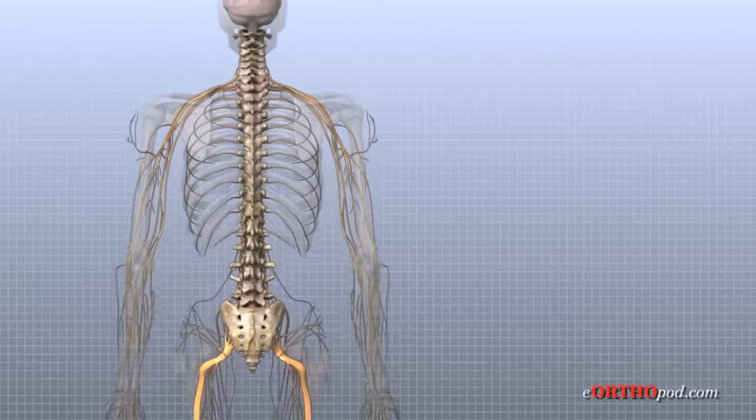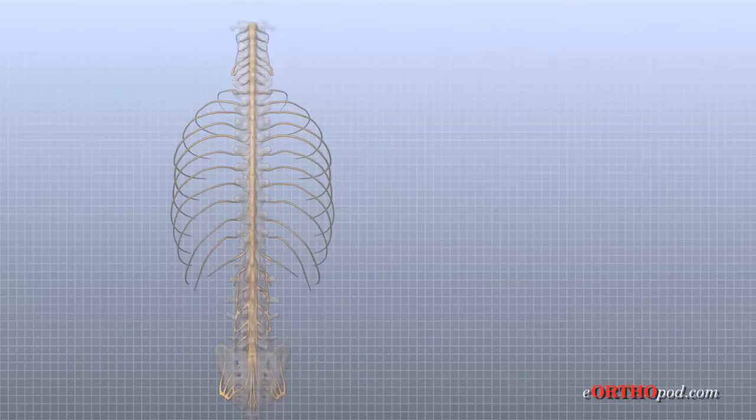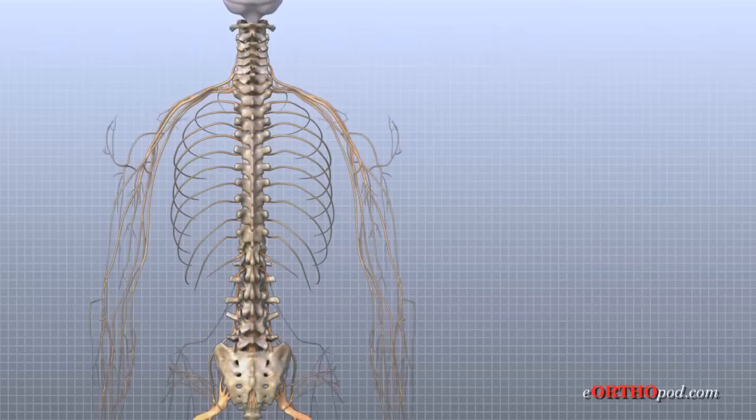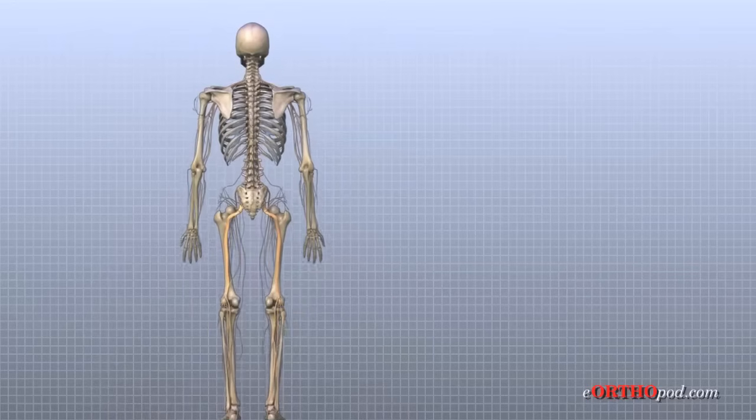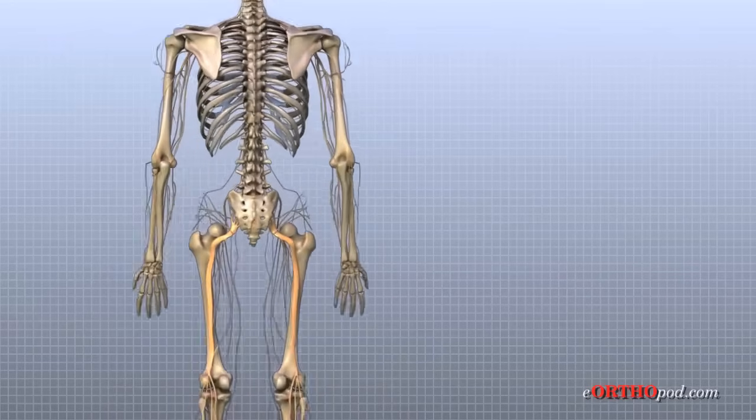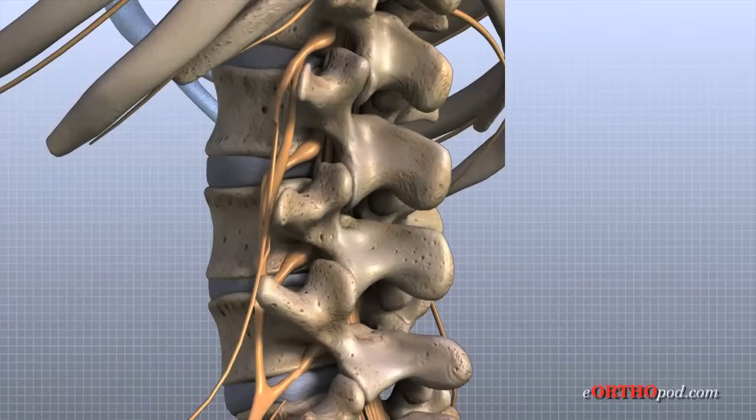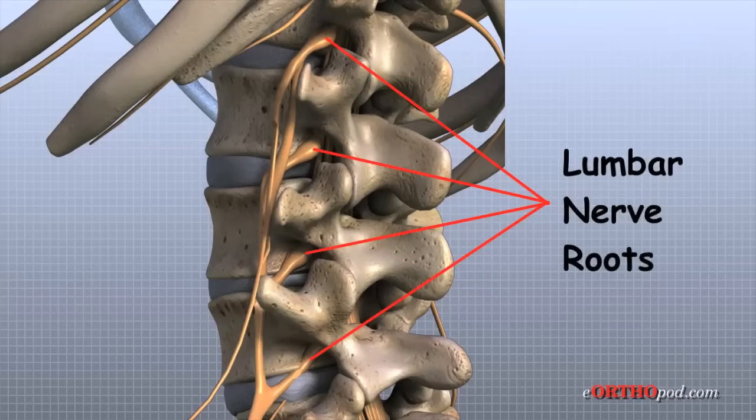As the spinal cord travels from the brain down through the spine, it sends out nerves on the side of each vertebra called nerve roots. These nerve roots join together to form the nerves that travel throughout the body and form the body's electrical system.